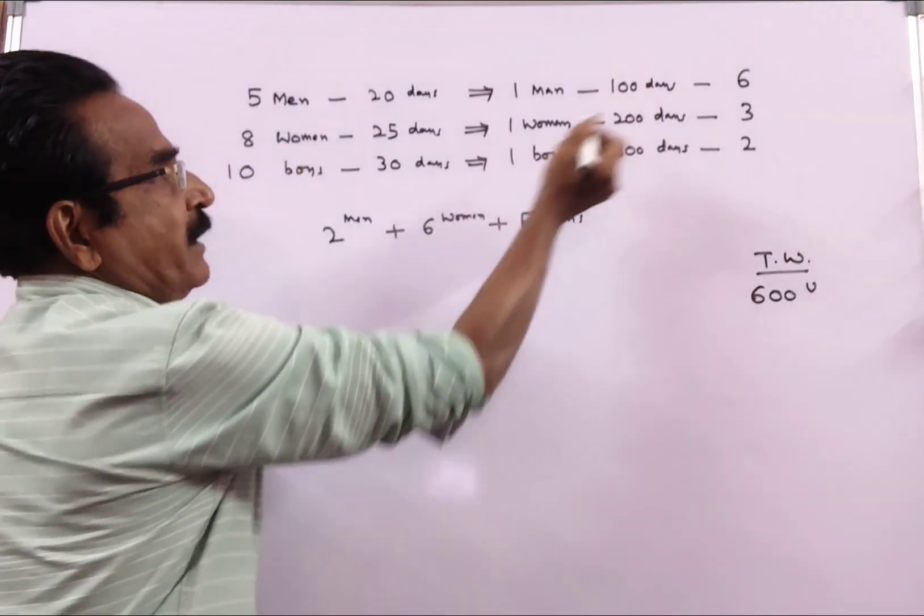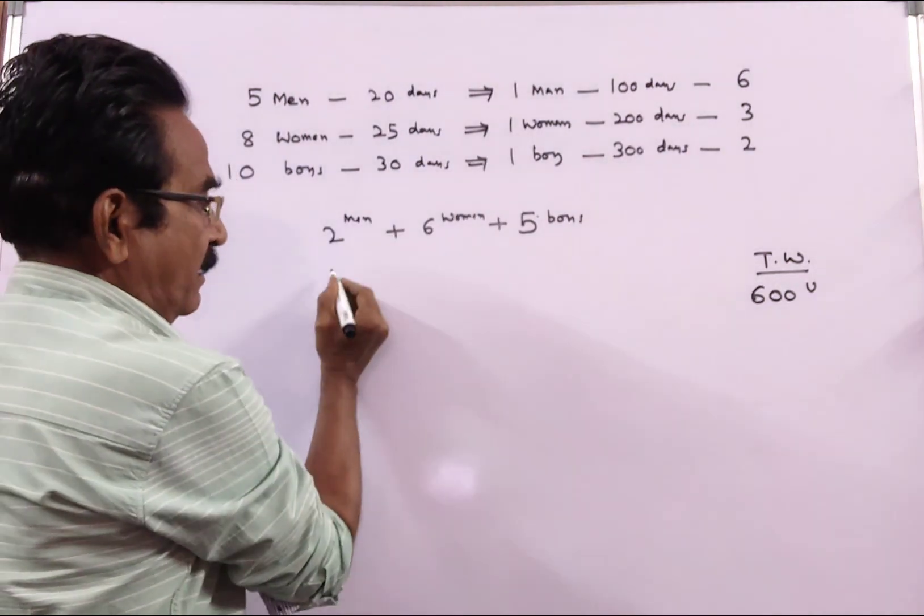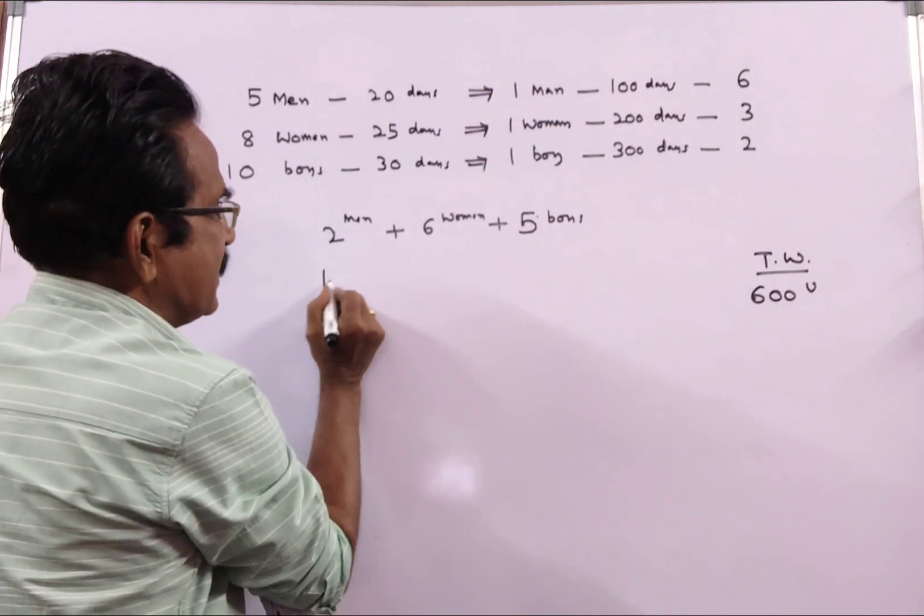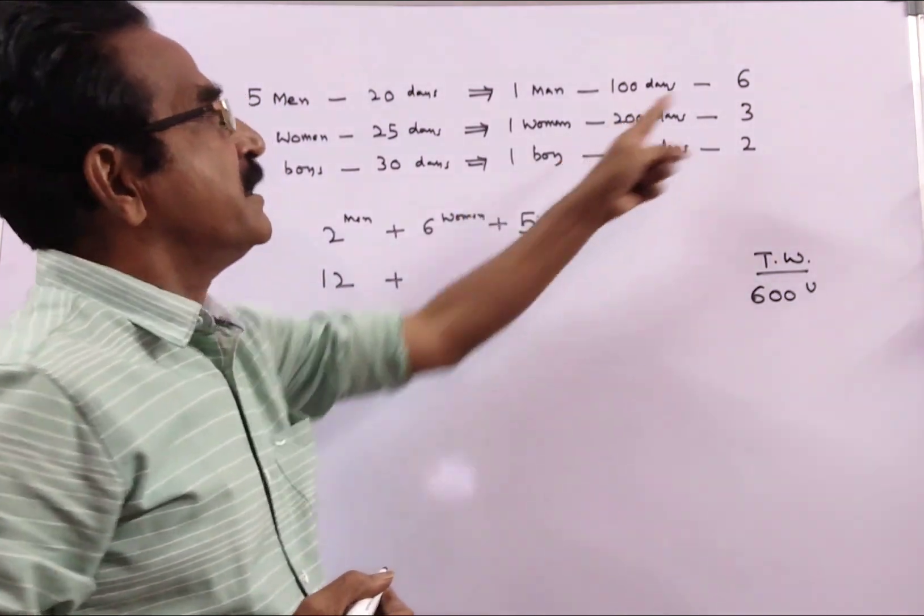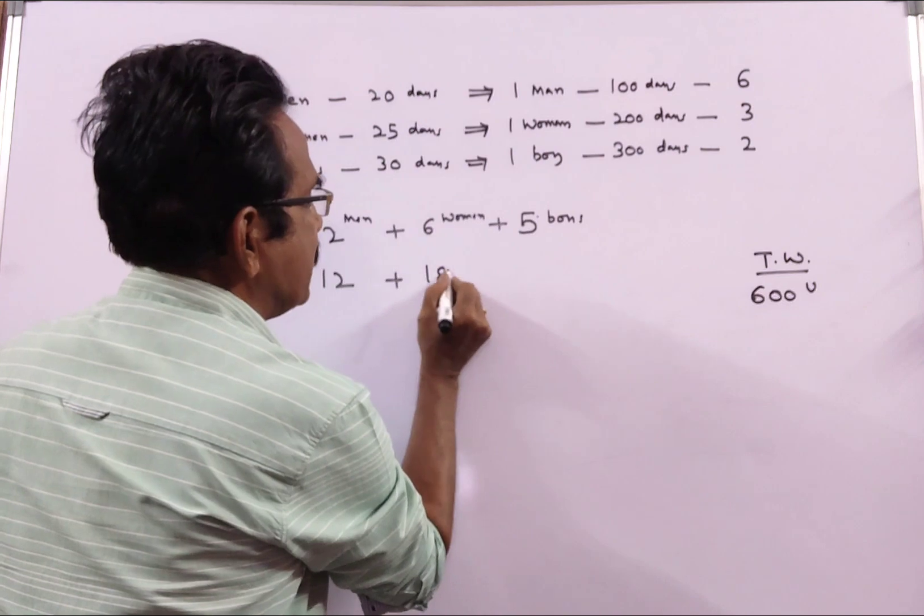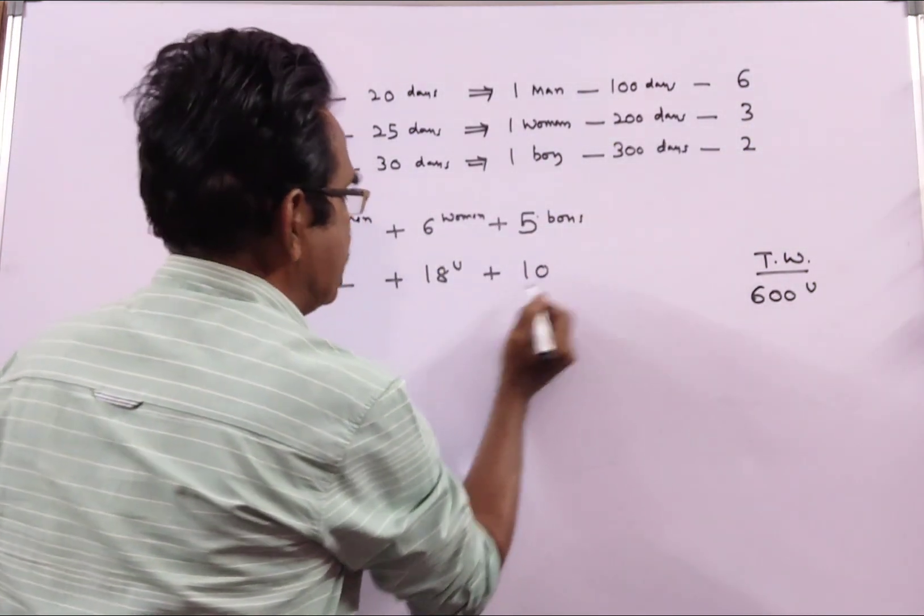Friends, 2 men means 1 man can do 6 units of work per day. So, total work per day, 2 men can do 12 units of work per day. And 6 women, 6 into 3, 18 units plus 5 boys, 5 into 2, 10 units.